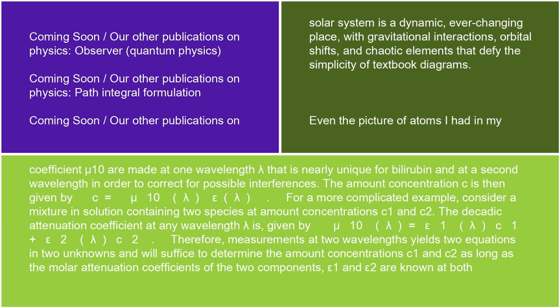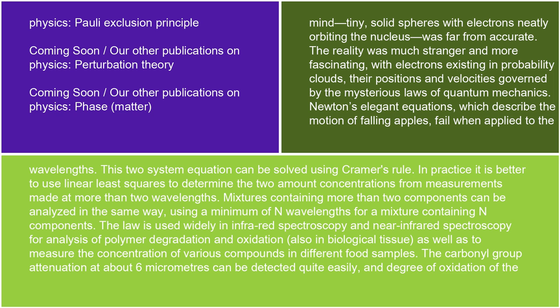The amount concentration C is then given by C = μ₁₀(λ)/ε(λ). For a more complicated example, consider a mixture in solution containing two species at amount concentrations C₁ and C₂. The Decadic attenuation coefficient at any wavelength λ is given by μ₁₀(λ) = ε₁(λ)C₁ + ε₂(λ)C₂. Therefore, measurements at two wavelengths yield two equations and two unknowns and will suffice to determine C₁ and C₂, as long as ε₁ and ε₂ are known at both wavelengths. This two-system equation can be solved using Cramer's rule.